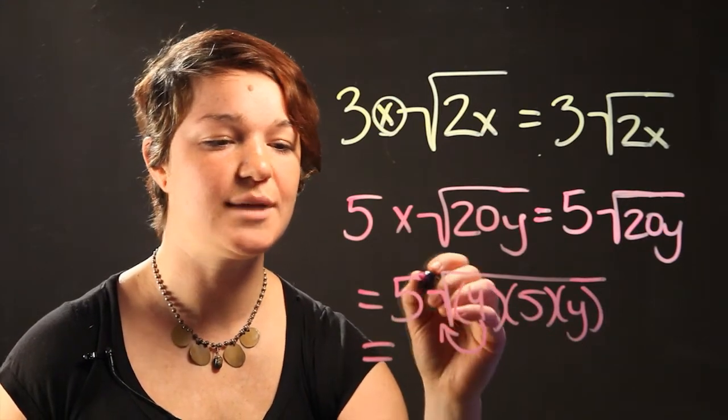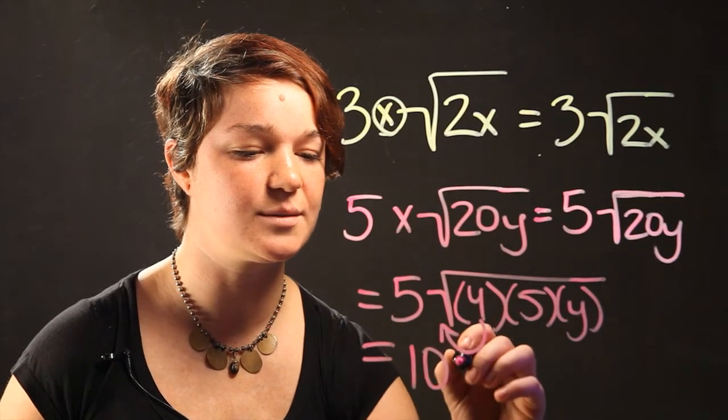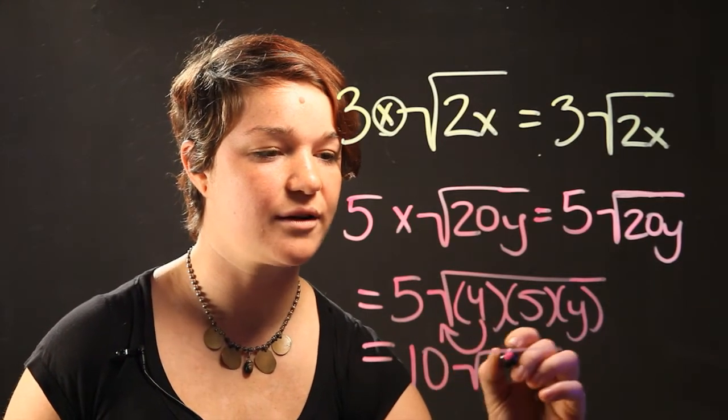So 2 multiplied by 5 is 10. So this expression is going to simplify to 10 radical of 5y.